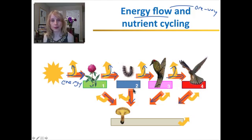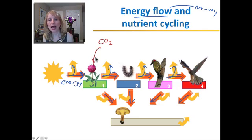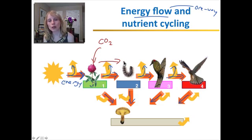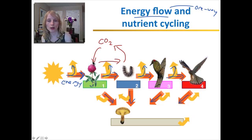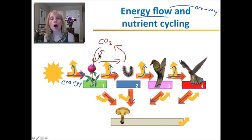Nutrients are a little different — they're not shown in this diagram. Let's take a nutrient like carbon. Carbon exists as carbon dioxide in the atmosphere, it is incorporated by plants during photosynthesis, and then animals get carbon in organic molecules when they eat plants. They do cellular respiration, which recycles the carbon back into the environment. Plants also do cellular respiration, so they will also recycle the carbon back into the environment. So energy has a one-way flow, but nutrients cycle — they are recycled through the environment.